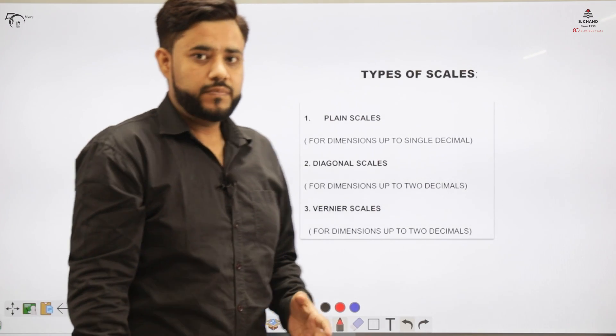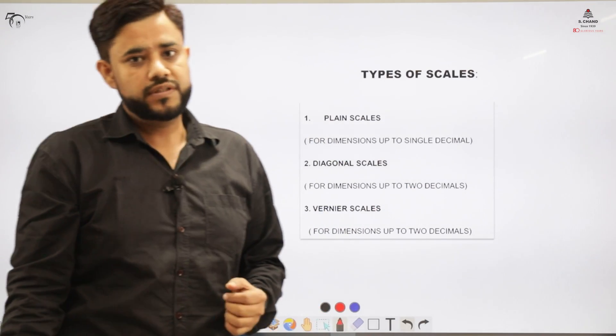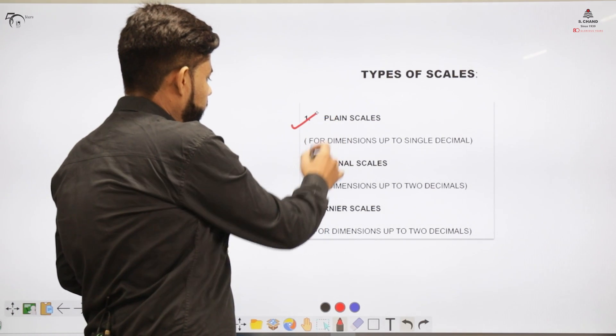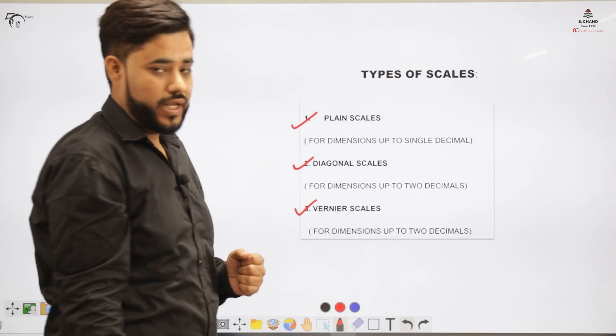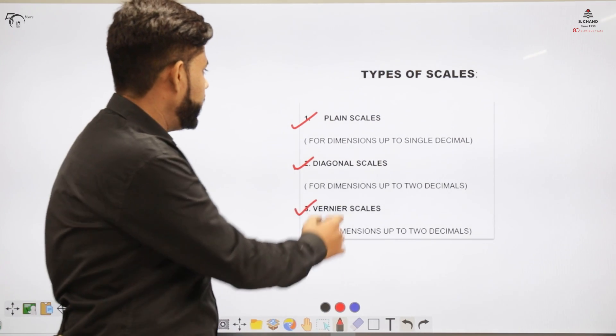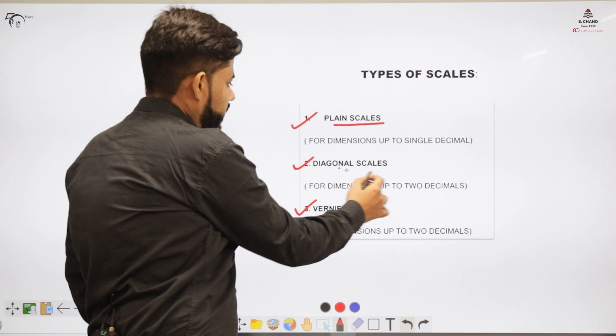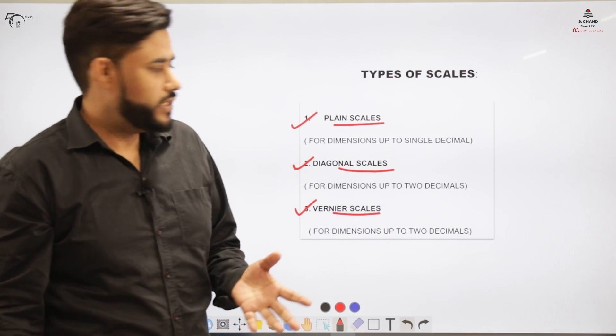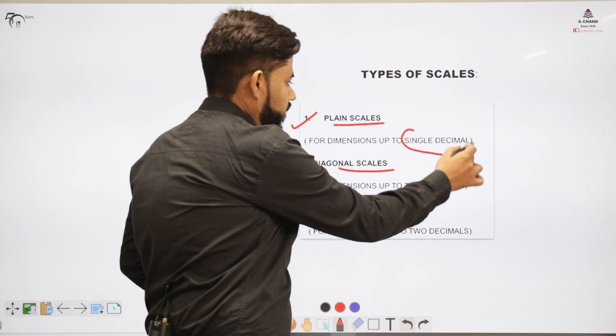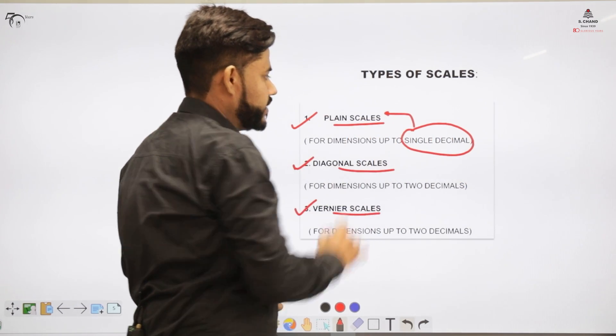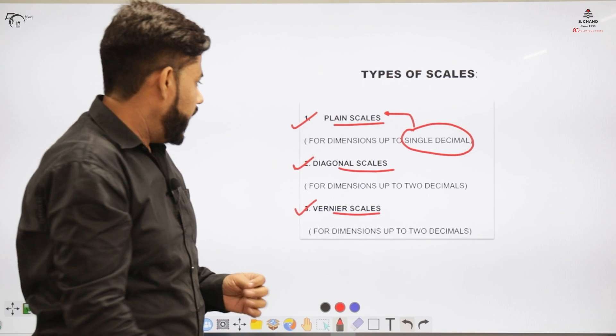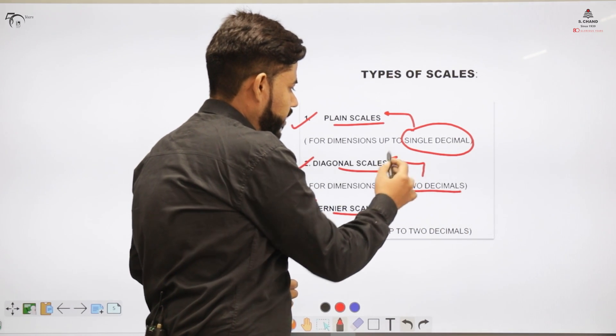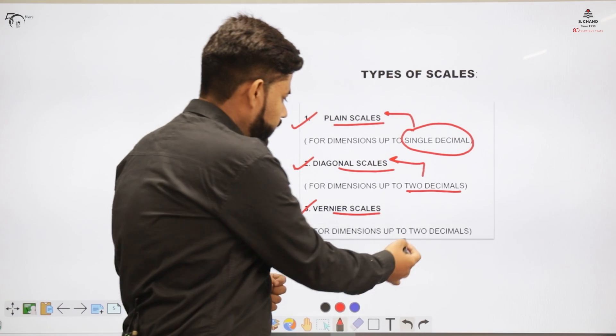Now according to the syllabus prescribed by UGC or AICTE, we have three different recommended scales that students may learn and these scales would be the plane scale, diagonal scale, and vernier scale. So if we want to represent the dimensions up to the single decimal point we can use this plane scale representation.